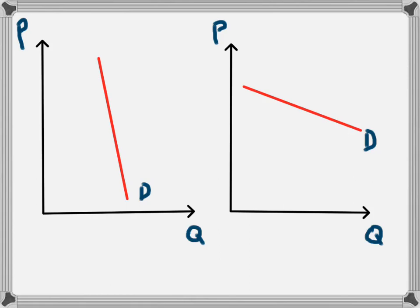We have two demand curves here and we know from our demand curves that as the price of a product falls the quantity demanded increases.